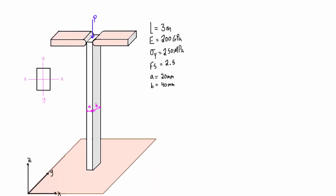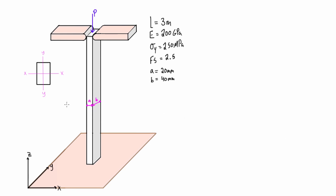Let's write those out. Our effective length for the YZ plane, where we have a fixed-pin connection, will be equal to 0.7L. So 0.7 times 3 meters is just 2.1 meters.